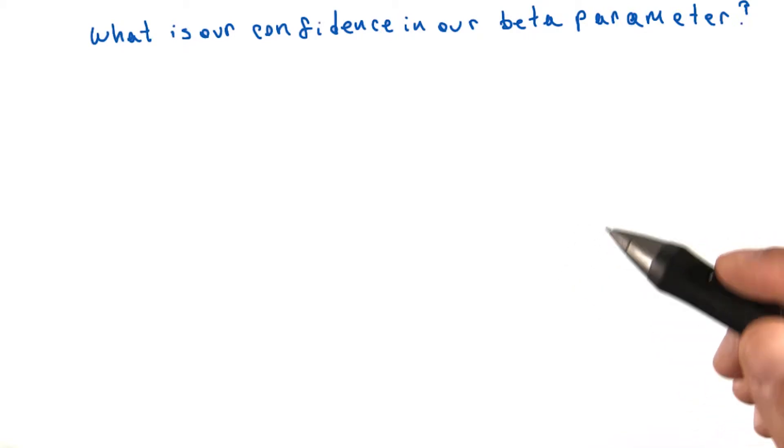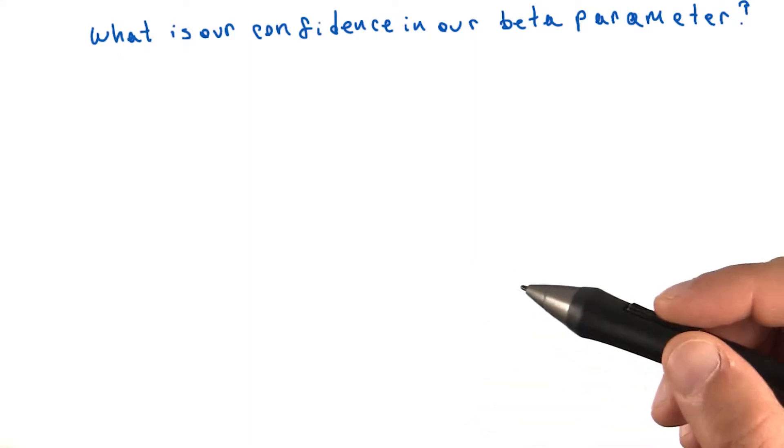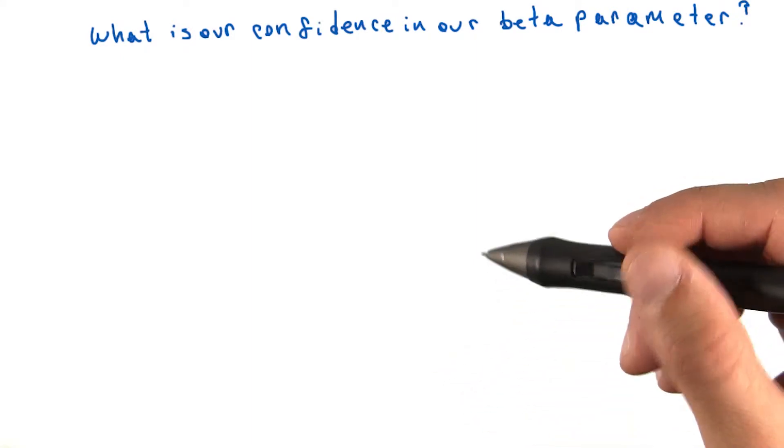Now that we've found the distribution that results in our observed data, what confidence can we have that the beta parameter we captured is the true value? The answer is it turns out it depends on how much data we have.